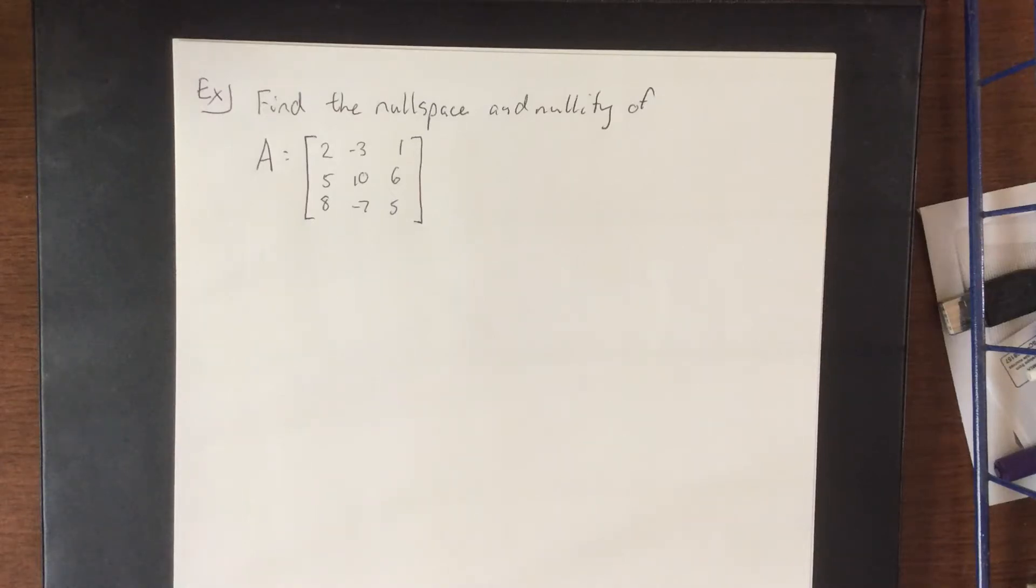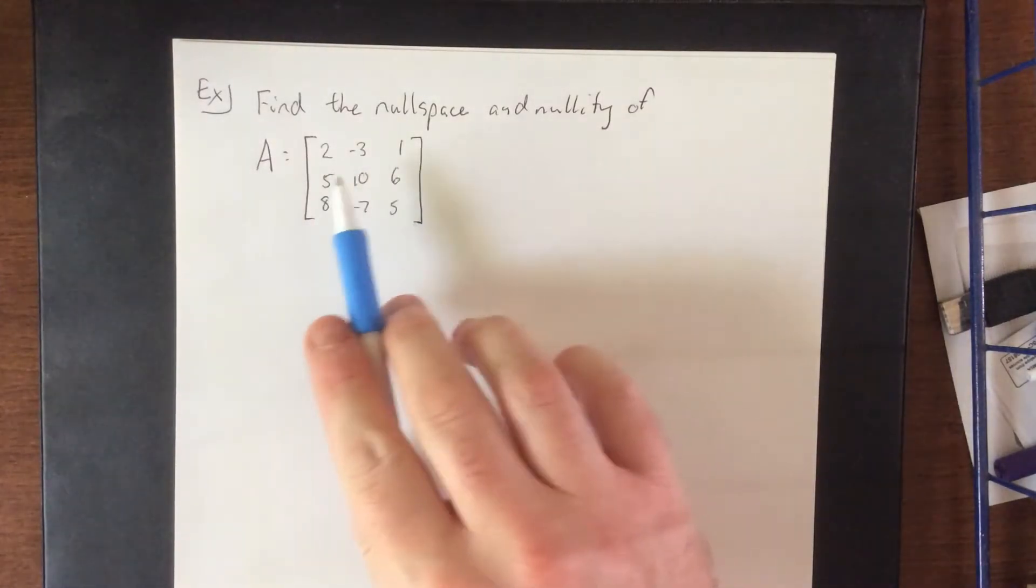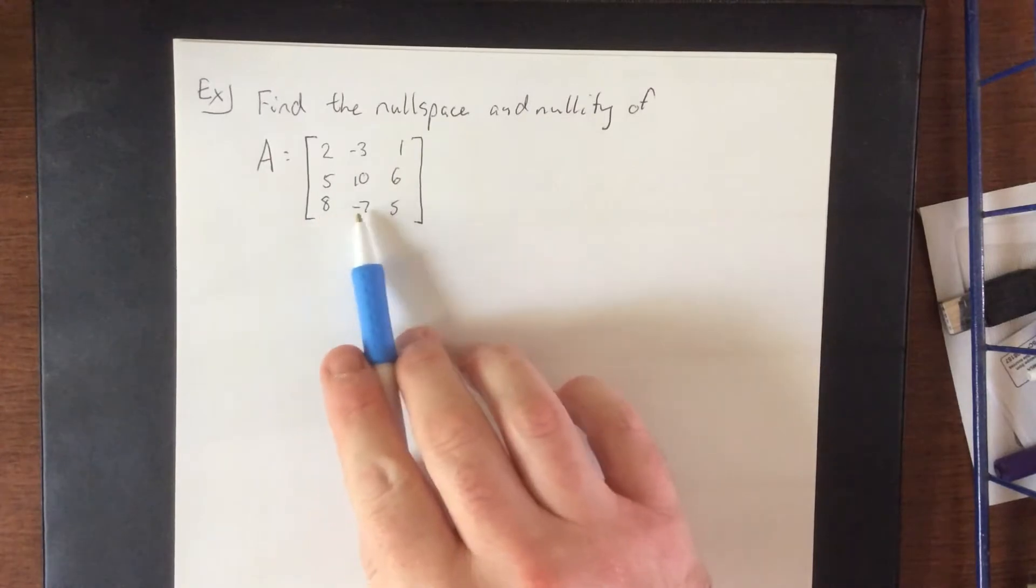In this example, we're going to be finding the null space and the nullity of the same matrix that we had in the last example: 2, negative 3, 1, 5, 10, 6, and 8, negative 7, 5.